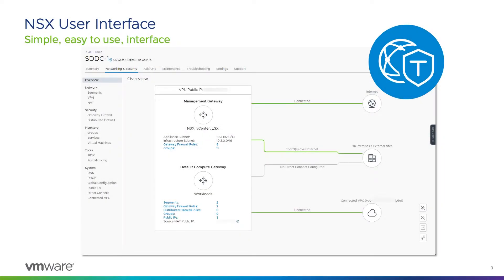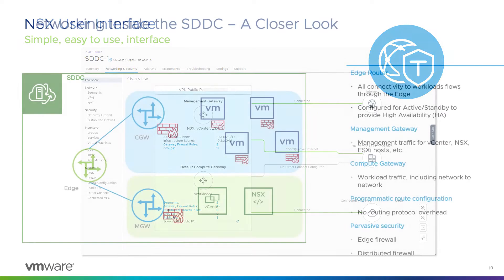All of the networking and security within the SDDC are provided by NSX-T and managed via the simplified network and security user interface in the SDDC console. Within this interface, we can manage SDDC network segments, VPN and Direct Connect configurations, NAT rules, edge and distributed firewall rules, public IP addresses, and more.